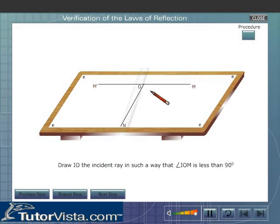Draw IO, the incident ray, in such a way that the angle IOM is less than 90 degrees.